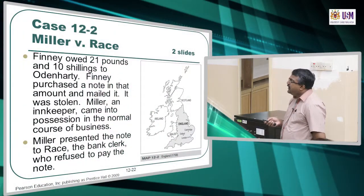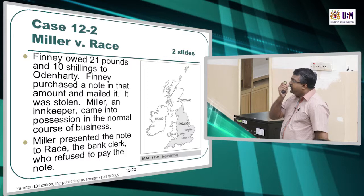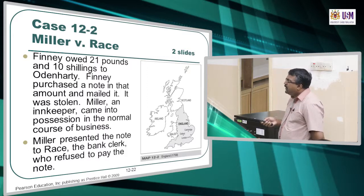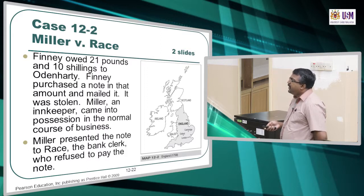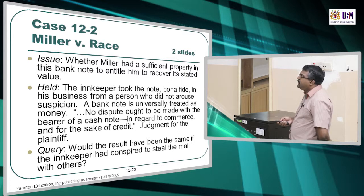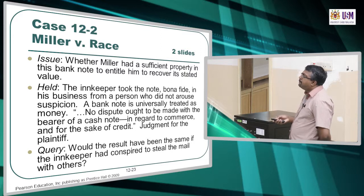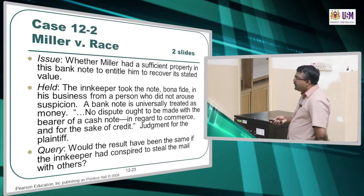Case: Miller versus Suresh — Finney owed 21 pounds of shillings to Odenherty. They purchased a note in that amount and mailed it, but it was stolen. Miller, an innkeeper, came into possession of the note in the normal course of business and presented it to Rays, a bank clerk, who refused to pay. The issue was whether Miller had sufficient property in the bank note to entitle him to recover its settled value. This case is more about theft of the note with no collateral involved.